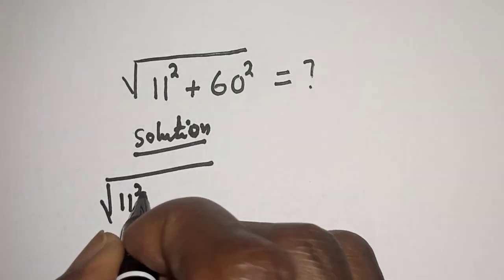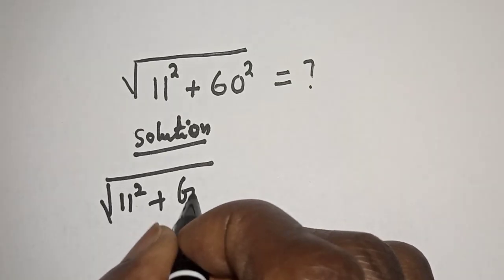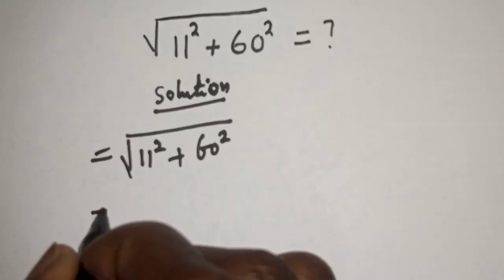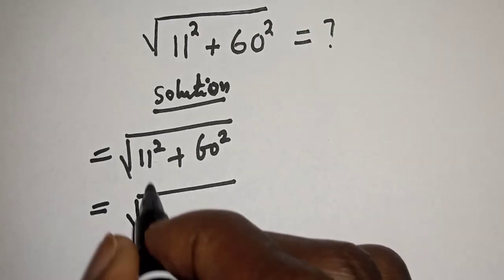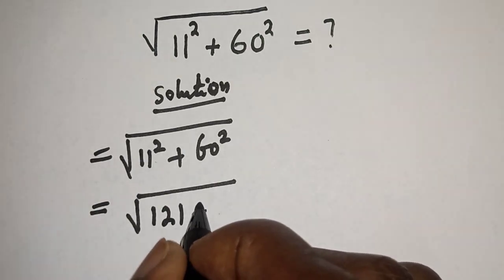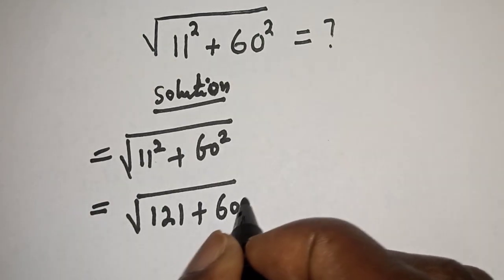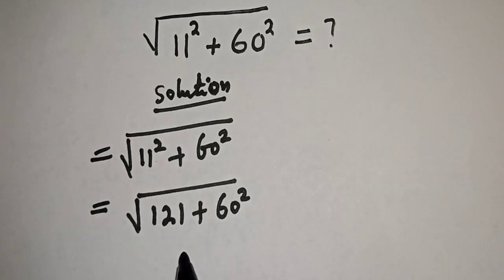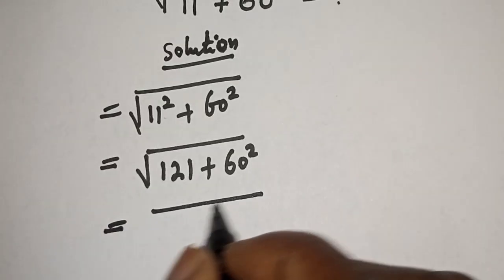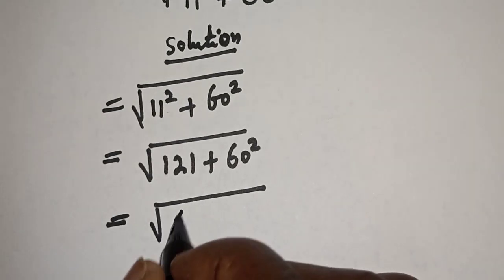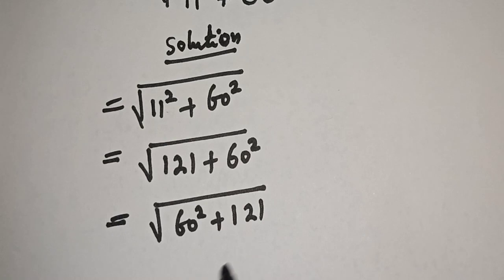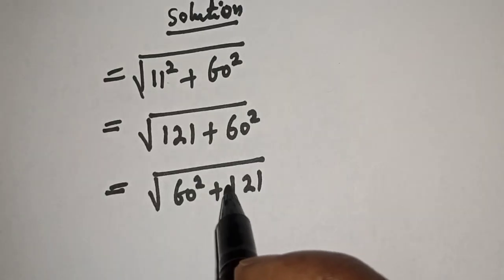This is equal to square root of 11 squared — which is 121 — plus 60 squared. We can rearrange this as square root of 60 squared plus 121. This does not formally change anything here.